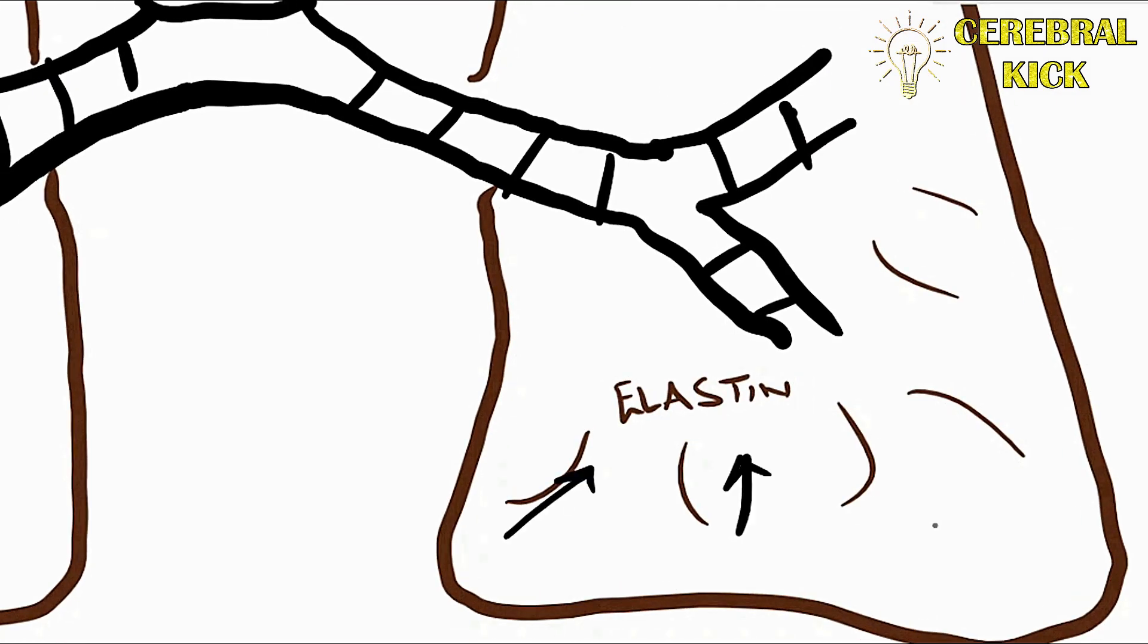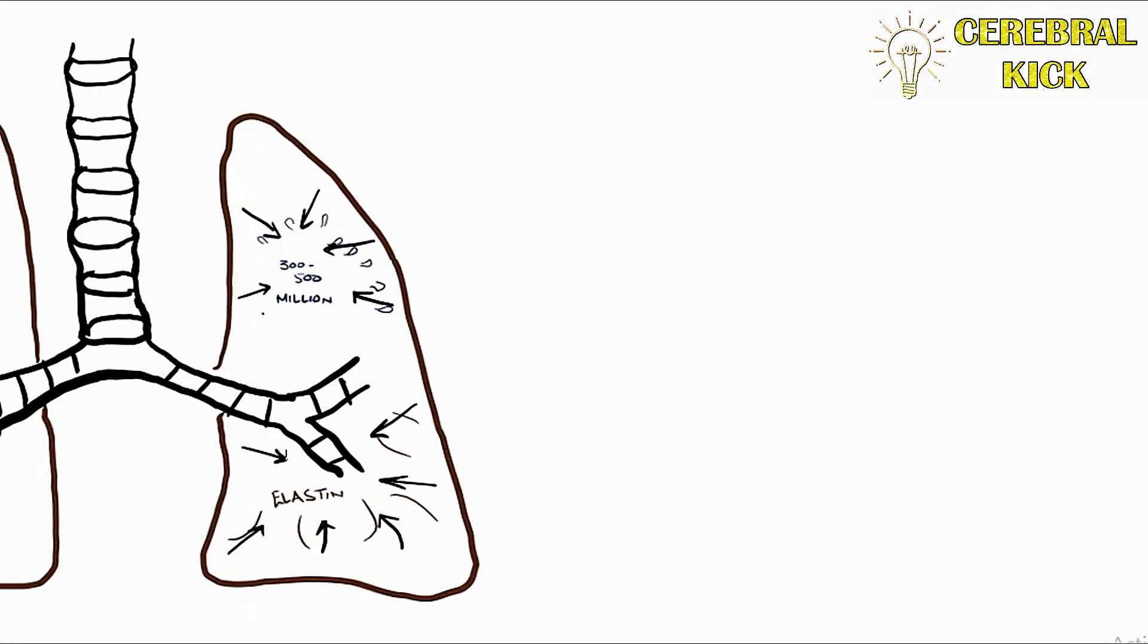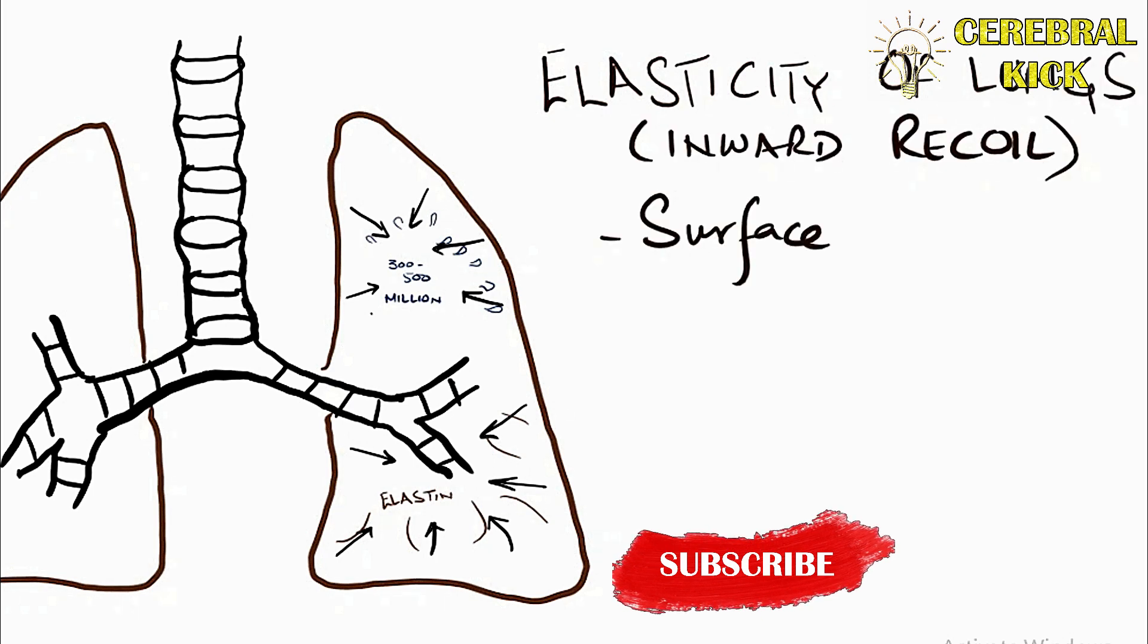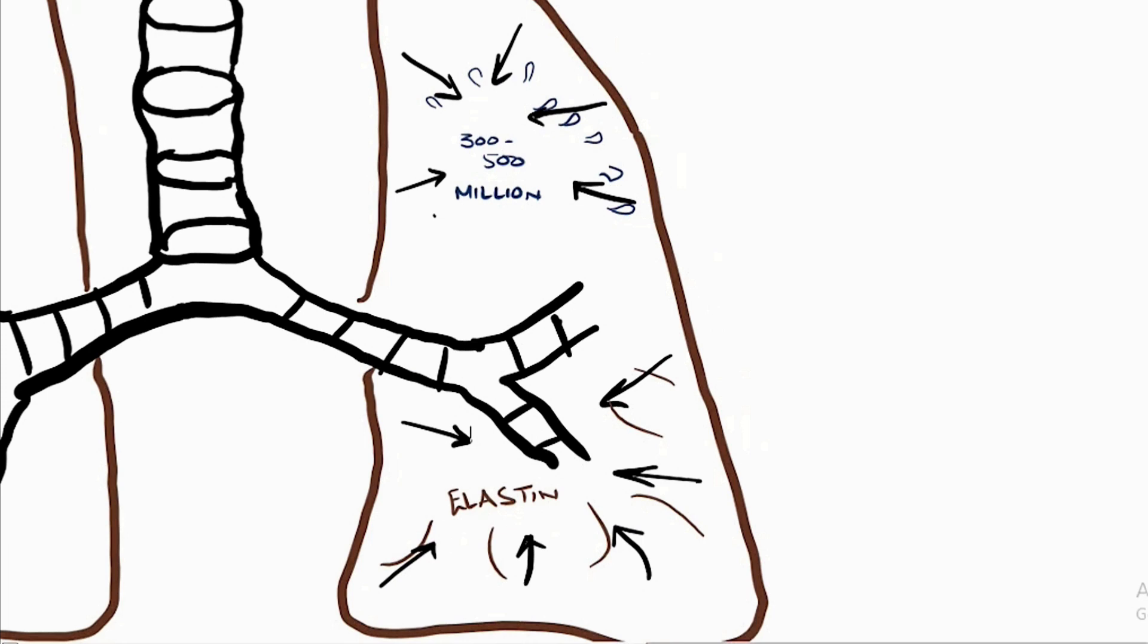And the second factor is the elastin fiber. We have already discussed an example of a rubber band. So in a similar way, when the elastin is overstretched, it would try to recoil back to its original position. So these two are the key forces behind elastic recoil or the elastance of the lungs.